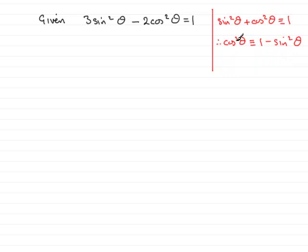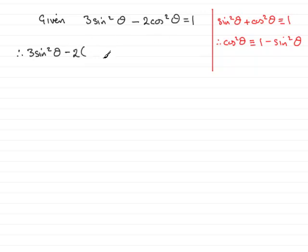So all we need to do now is substitute cos squared theta with 1 minus sine squared theta into the equation above. So what we have is 3 sine squared theta minus 2 multiplied by, instead of cos squared theta, 1 minus sine squared theta, and that is equal to 1.